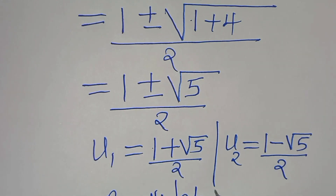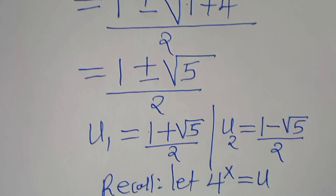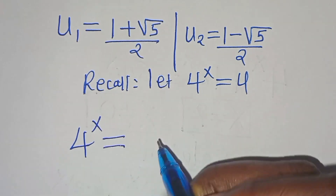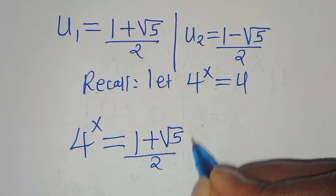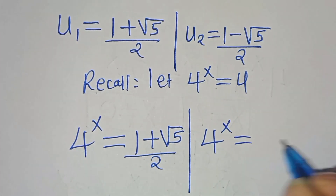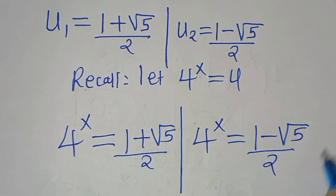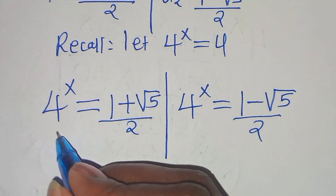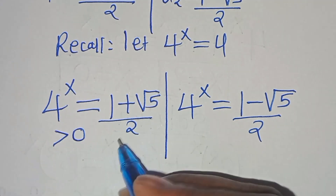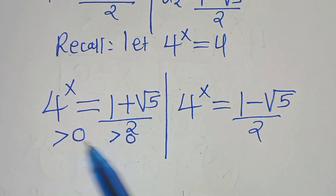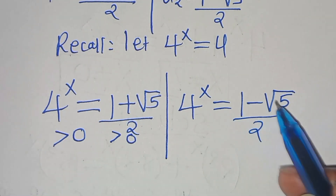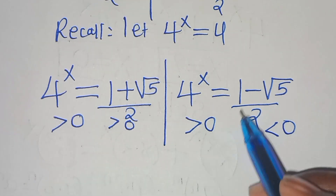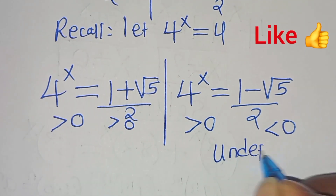Recalling that we let 4 to the power of x equal u, we substitute back. For u₁: 4 to the power of x equals (1 plus square root of 5) over 2, which is greater than 0 — so we can proceed. For u₂: 4 to the power of x equals (1 minus square root of 5) over 2, which is less than 0. Since 4^x is always greater than 0, this gives an undefined result and is rejected.